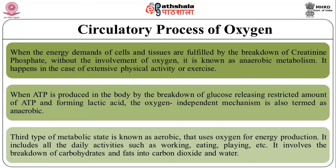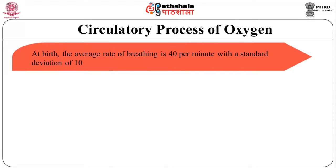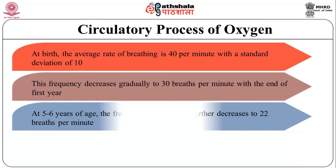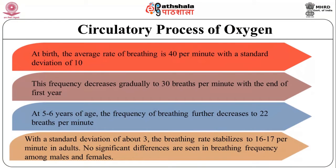At birth, the average rate of breathing is 40 breaths per minute, with a standard deviation of plus or minus 10. This frequency decreases gradually to 30 breaths per minute by the end of the first year. At age 5 to 6 years, the frequency further decreases to 22 breaths per minute with a standard deviation of about plus or minus 3. The breathing rate stabilizes to 16 to 17 per minute in adults, with no significant differences seen in breathing frequency between males and females.